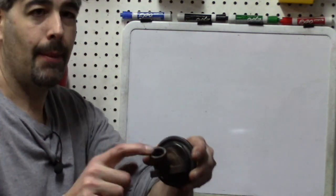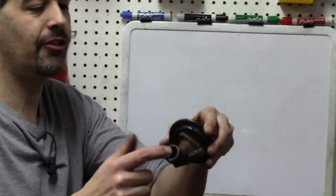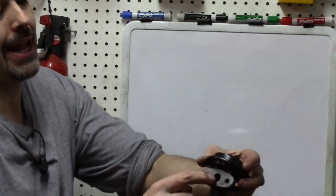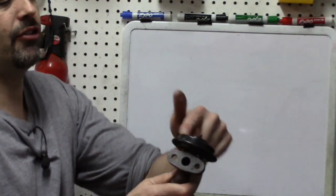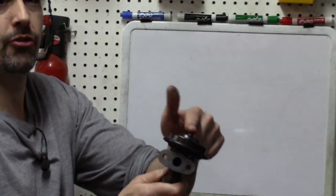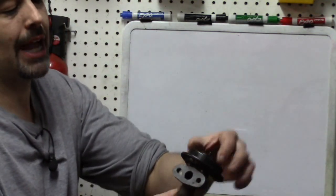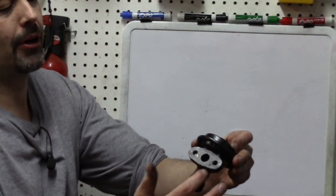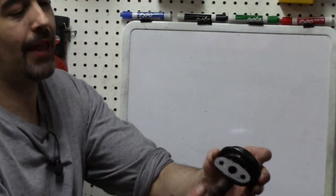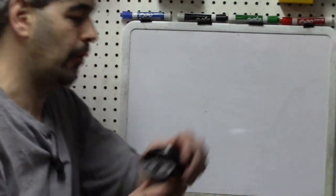It basically recirculates exhaust gas through the intake manifold. On this particular valve, there are different ones, but there is going to be an inlet here from the exhaust, and then an outlet into the intake manifold. And basically, this is a diaphragm that is vacuum controlled. There are also electronic ones, which we'll talk about.